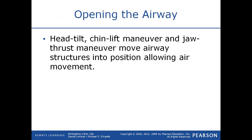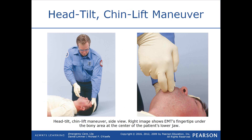The most common method of opening the airway is the head tilt chin lift maneuver, which you learned in basic life support, and then there is the jaw thrust maneuver. Both of these move airway structures into a position allowing for air movement. When performed properly, both lift the tongue up off the back of the throat by displacing the jaw toward the ceiling. The tongue is attached to the lower jaw, and by moving it upward the airway opens, allowing a clear passage to the lungs.